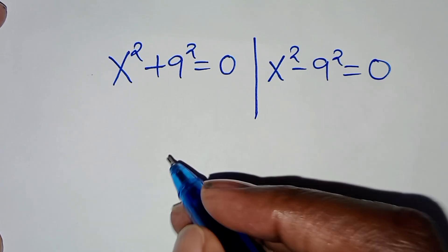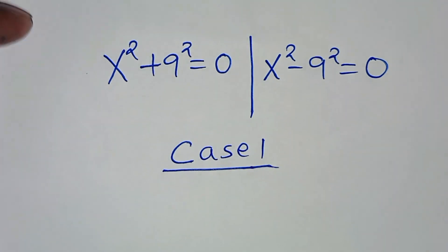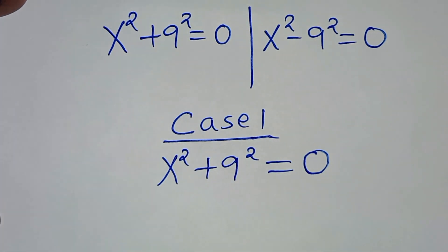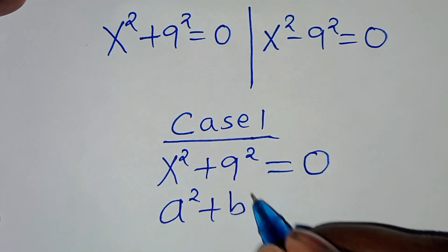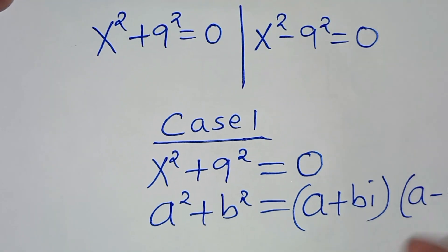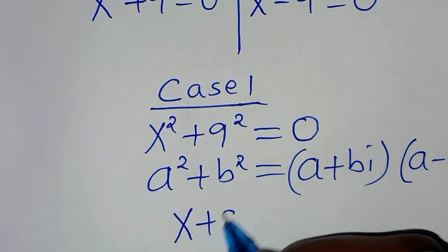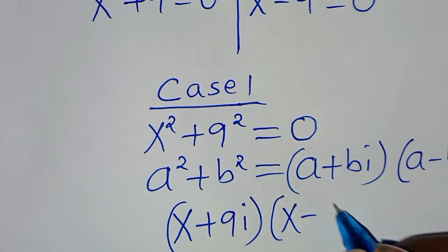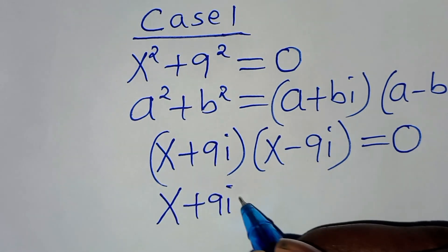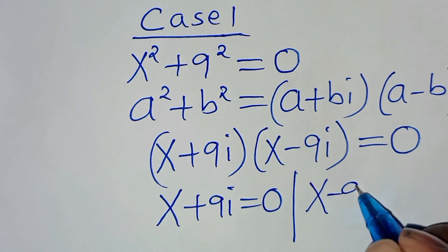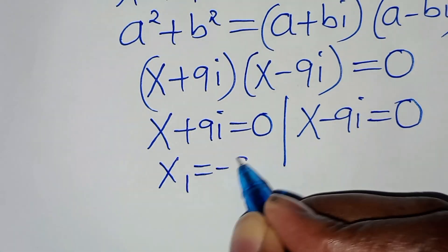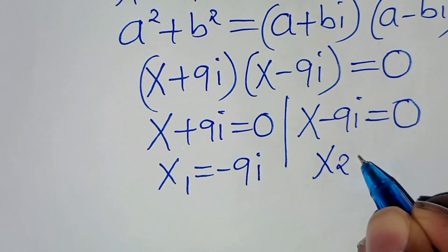Let's start with Case 1. We have x squared plus 9 squared, equal to 0. This equation is in the form of a squared plus b squared, which we can express as (a plus bi)(a minus bi). So here we have (x plus 9i)(x minus 9i) equal to 0. From the first part, x₁ is equal to minus 9i, and x₂ is equal to 9i.